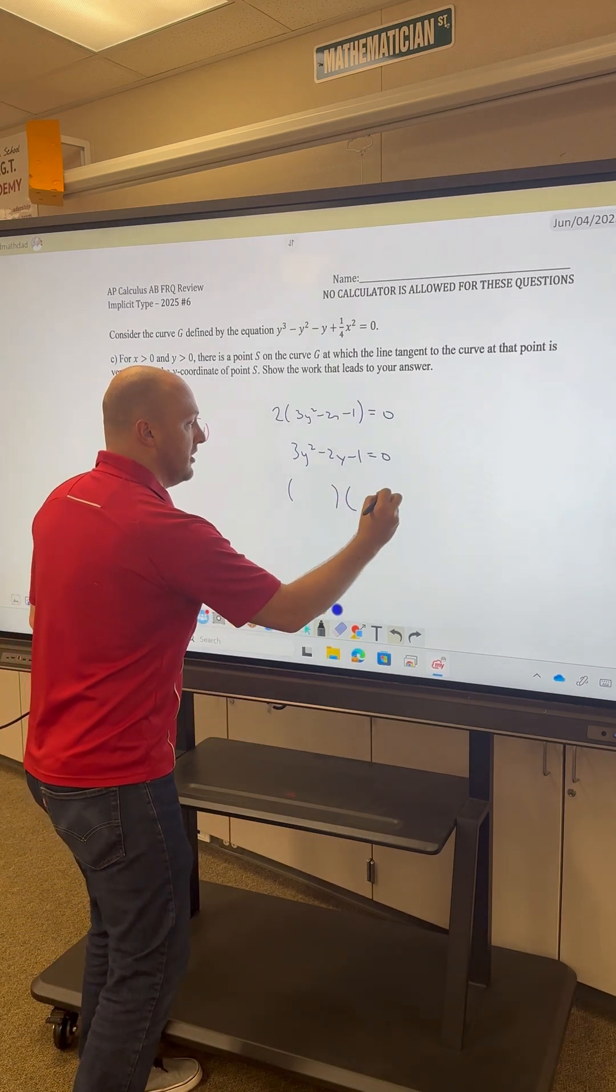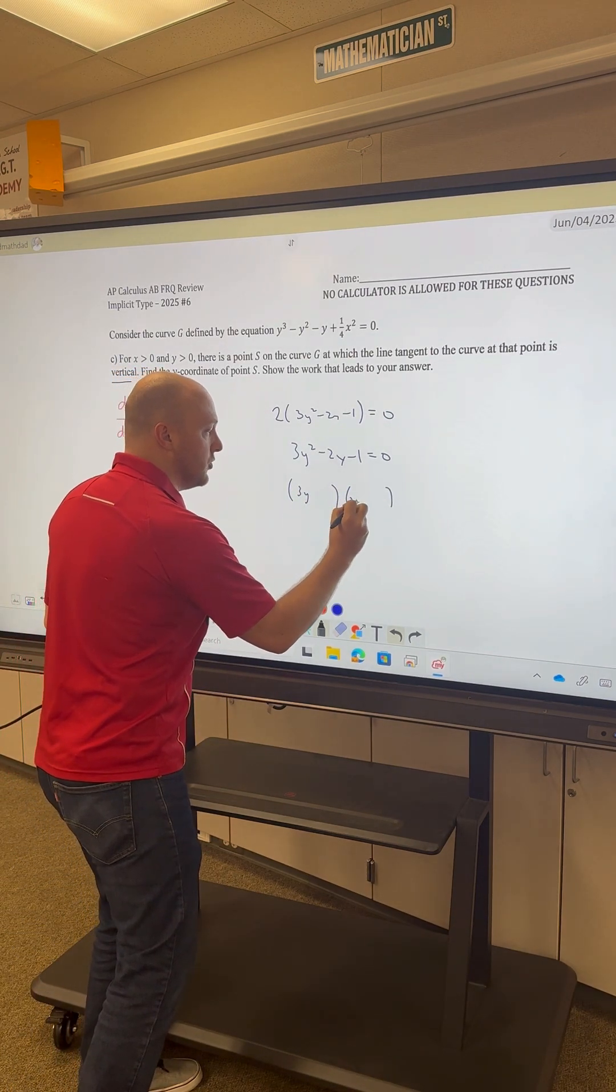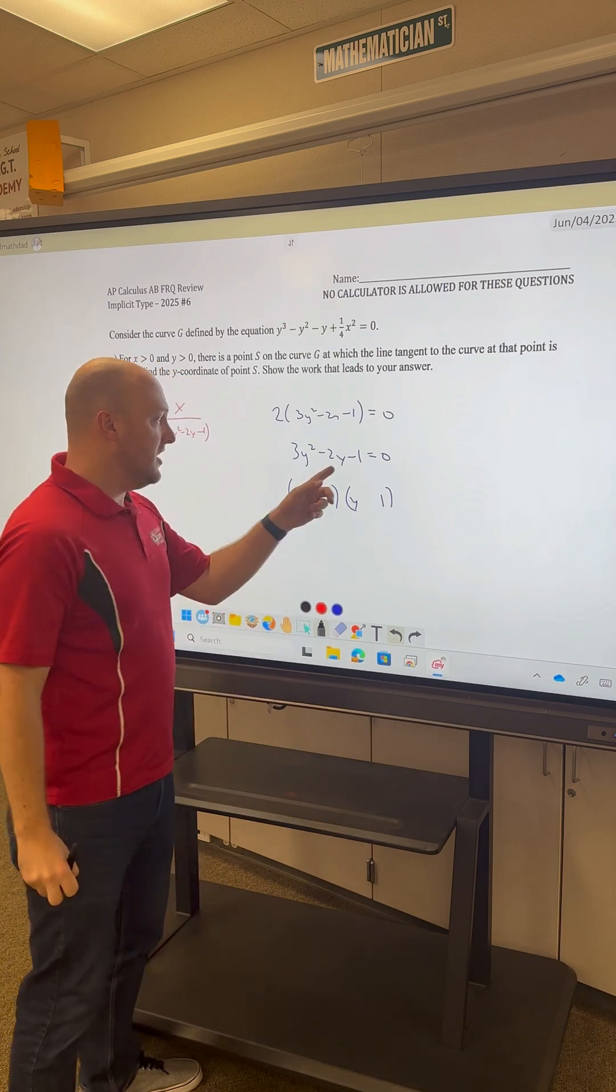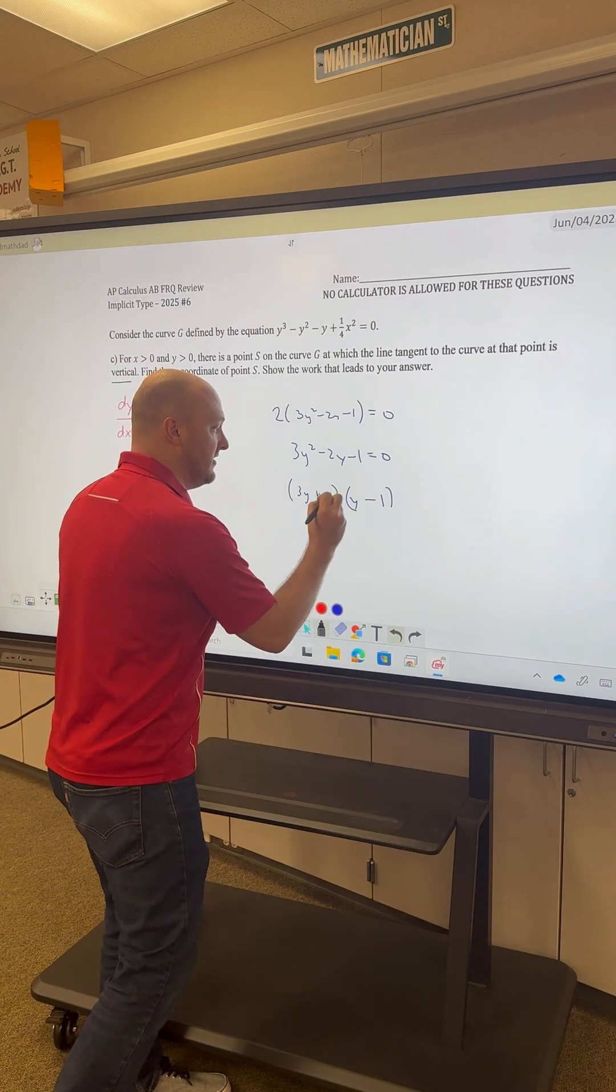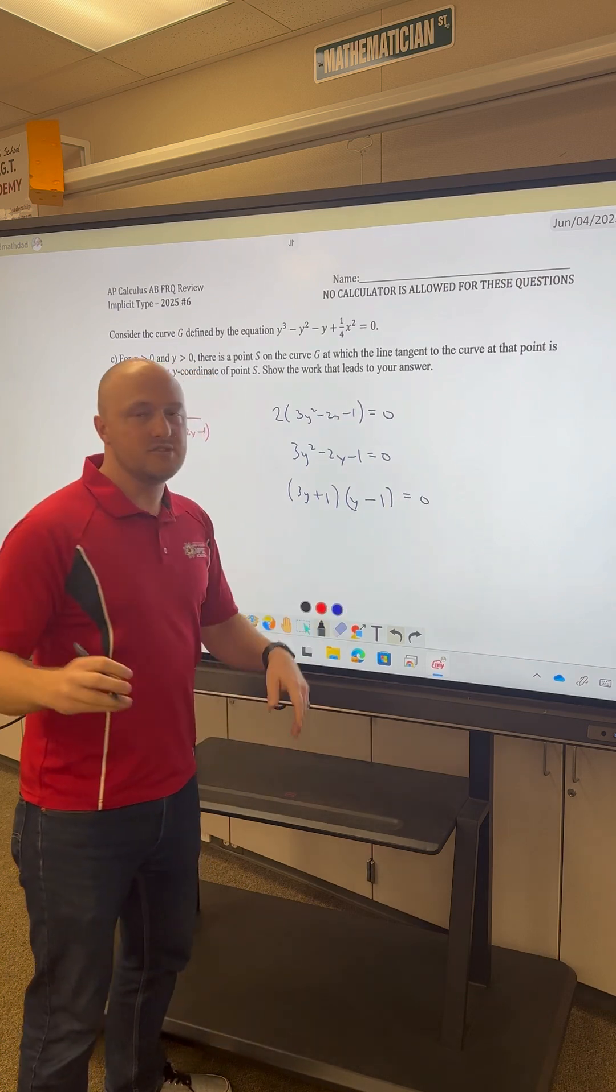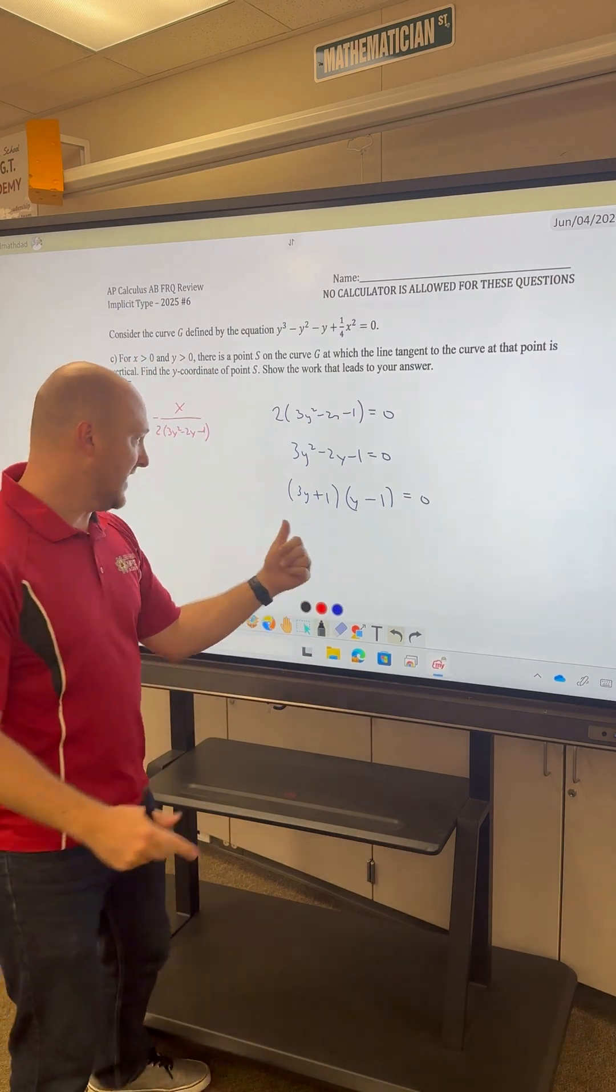We have 3y times y, 1 times 1, and I want a negative 2y in the middle, so I'll make the 3y times the 1 negative and this positive. We can use the zero product property and set each factor equal to 0.